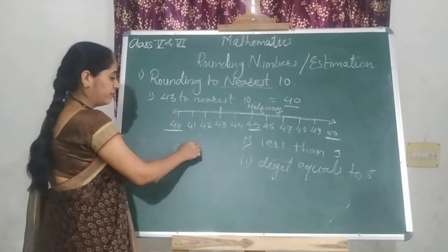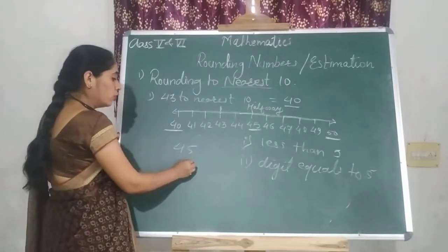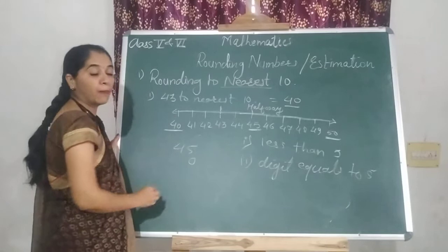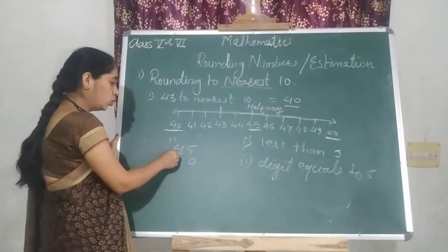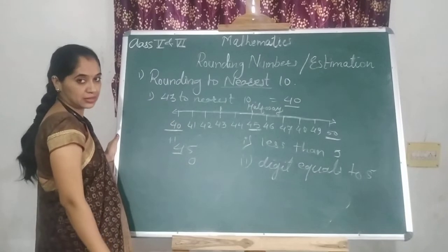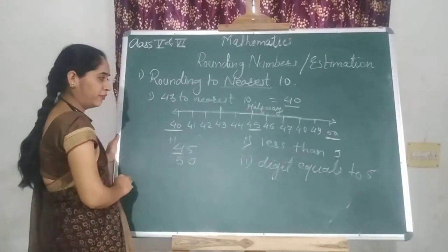Suppose you have 45, then what you will do? You will replace this 5 by 0 and you will add 1 to its nearest place. Clear? So it will be 50.